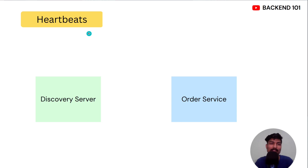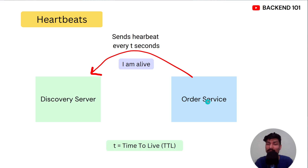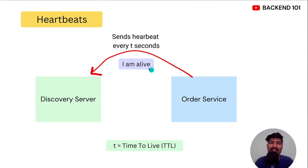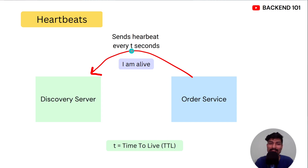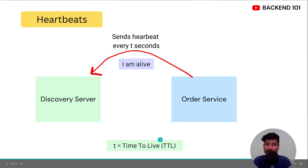Another technique is heartbeats. If we notice in the health checks method, it was the discovery server who initiated the request. In heartbeats, the order service initiates the request — it proactively sends heartbeats every t seconds. Heartbeats is nothing but a message that indicates to the discovery server that the order service is alive. Basically, a heartbeat is an "I am alive" message. The order service needs to renew these heartbeats every t seconds. So if it fails to renew the heartbeats within t seconds, the discovery server will assume that the order service is dead. Therefore, t is also known as the time to live — meaning for t seconds, the discovery server will assume that the order service is alive.